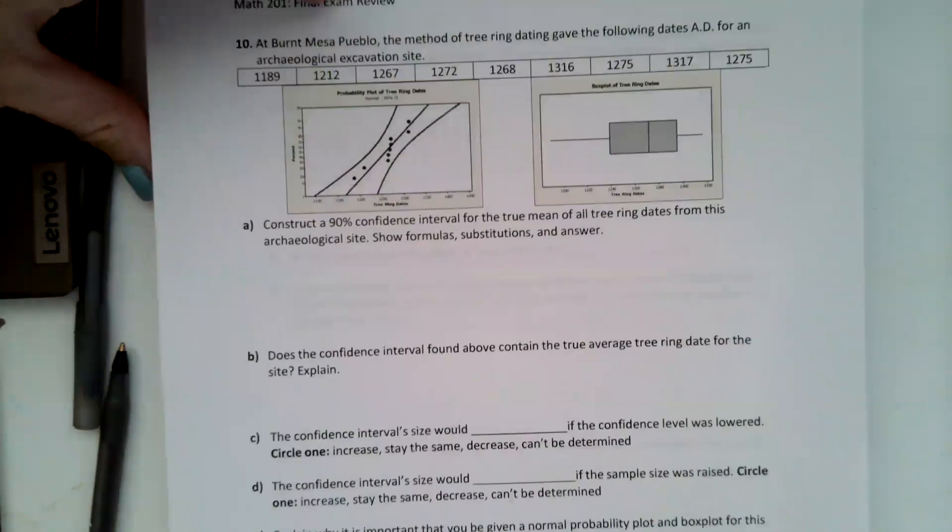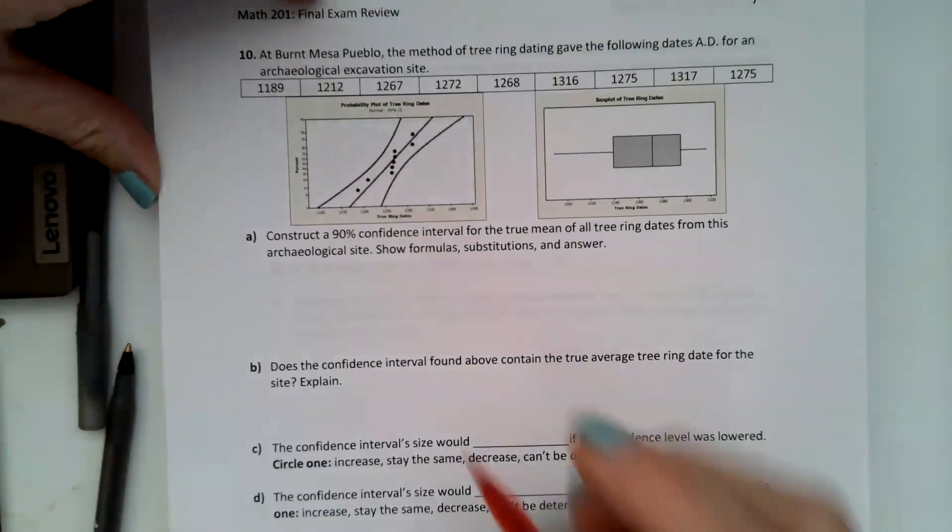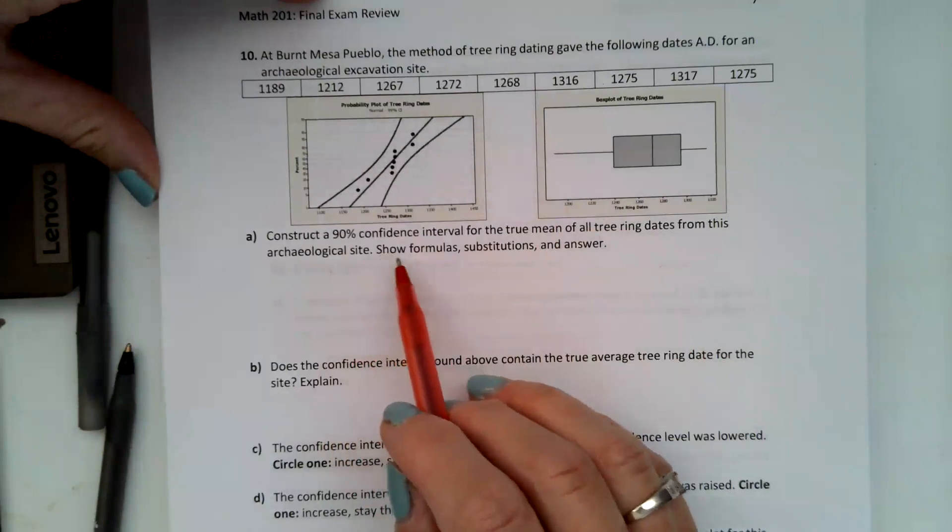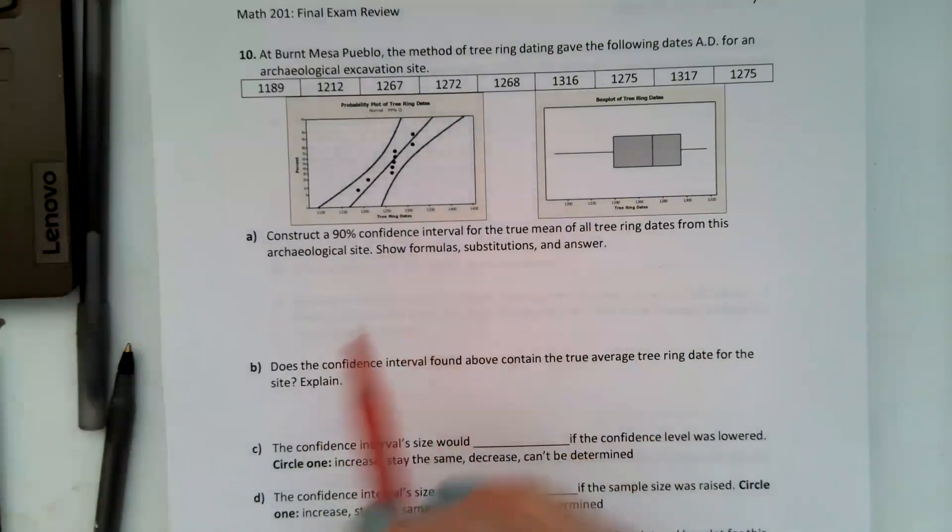It says construct a 90% confidence interval for the true mean of all tree ring dates from this archaeological site. Show formulas, substitutions, and answer. So we're going to go to our formula packet.